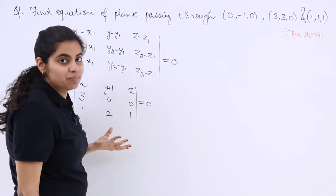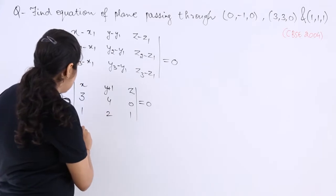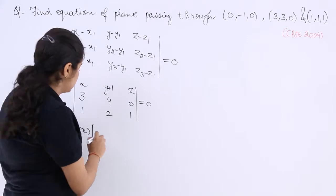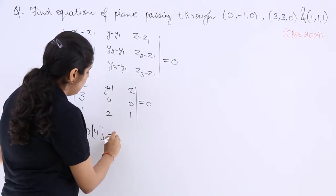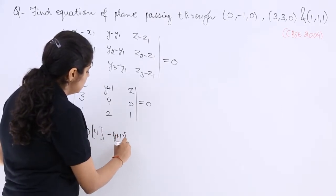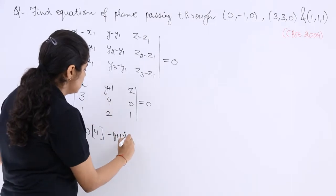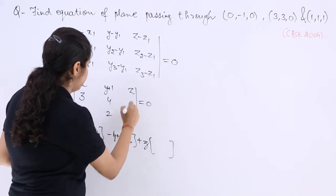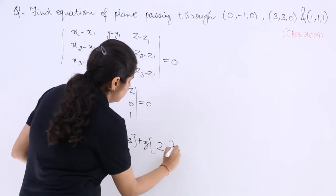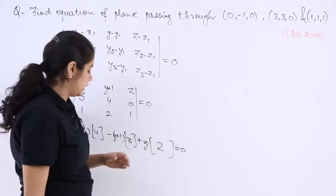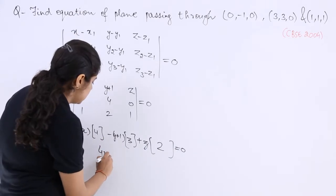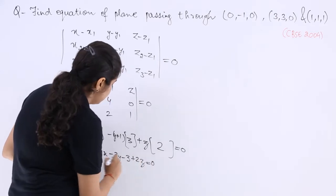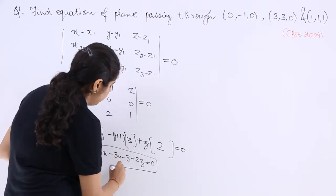Now see, this is simple determinant which you can always solve. If I take x common, then you have to just inside treat 4 and this, so it becomes 4. Then taking y plus 1 outside, then inside it is 3. Then taking z outside, then inside it is 2 is equal to 0, right? Now 4x minus 3y minus 3 plus 2z is equal to 0 is the equation of a plane.